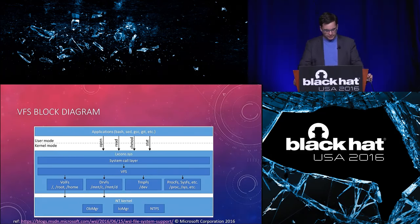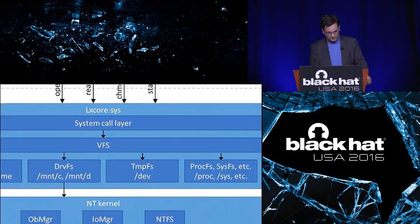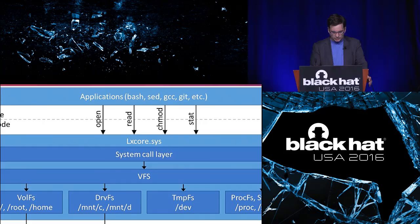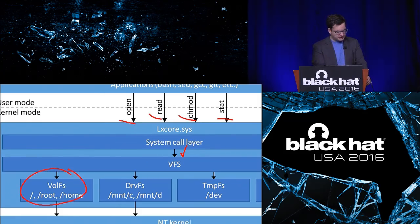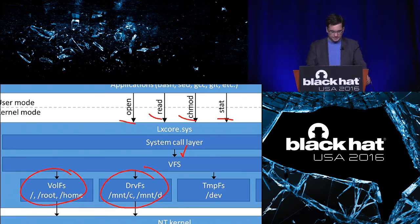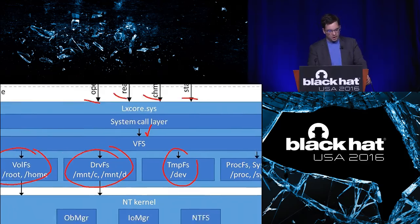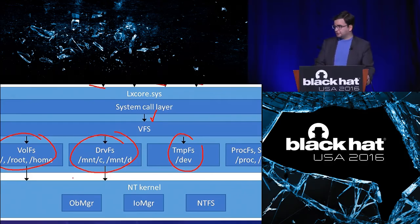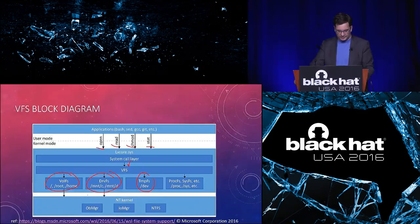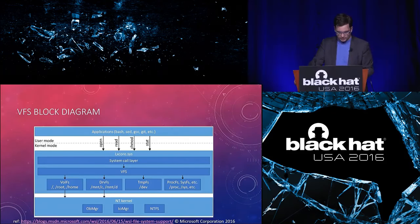Microsoft has a good diagram on their blog showing: there's your Linux application, there's LX Core, all the system calls implemented by the system call layer go down to VFS, then there's VolFS for your Linux environment, DRVFS for your Windows mount points, and then tmpFS, ProcFS, SysFS, etc. All this is built on top of the NT kernel's object manager, IO manager, and NTFS. Ultimately the reads and writes are still done by the NT kernel.